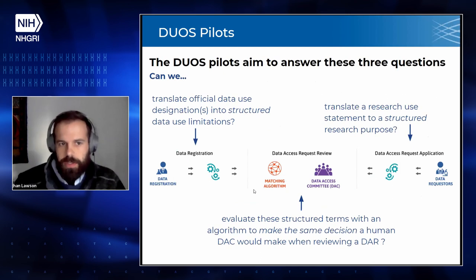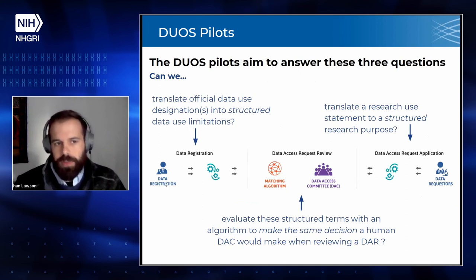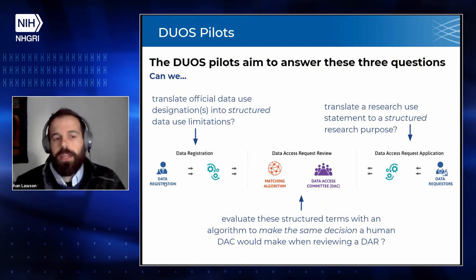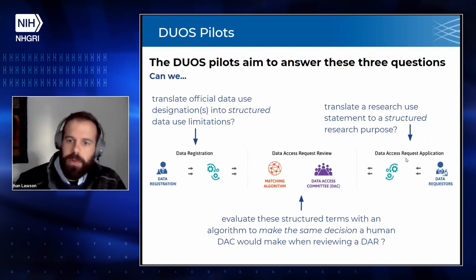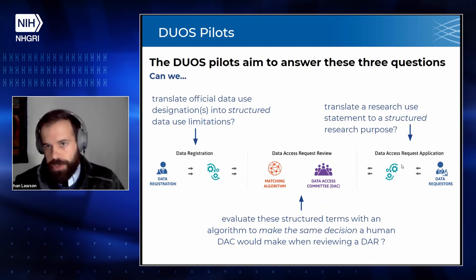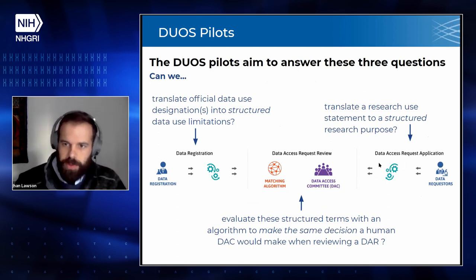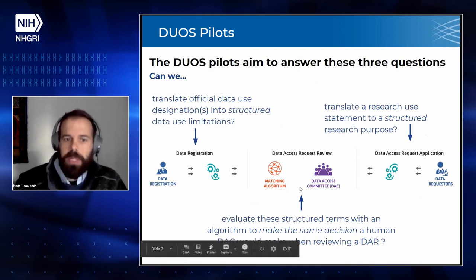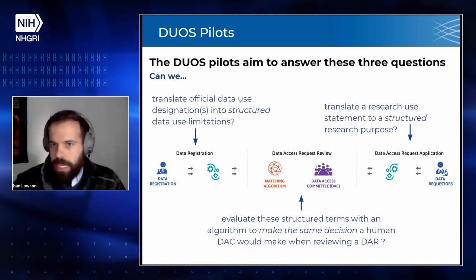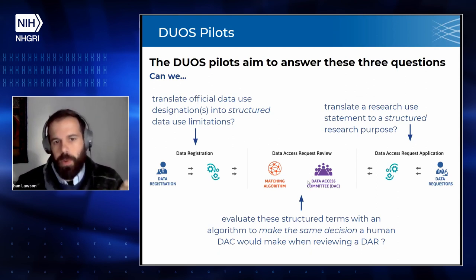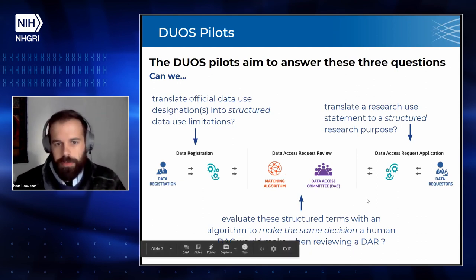In that pilot, we want to ask ourselves: first, are we accurately translating what is in consent forms into coded data use terms? And are we also accurately able to do the same when a researcher writes a narrative research use statement — are we able to structure that with Data Use Ontology codes accurately? And then ultimately, once we have those computable versions, does our matching algorithm and the data access committee comprised of human members end up making the same decision? It's this iterative process we're going through internally at the Broad with our own data access committee and with a growing number of NIH stacks.